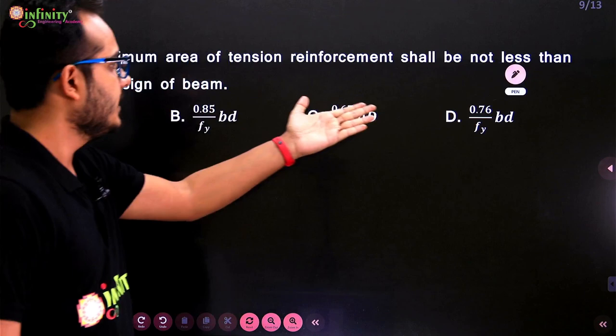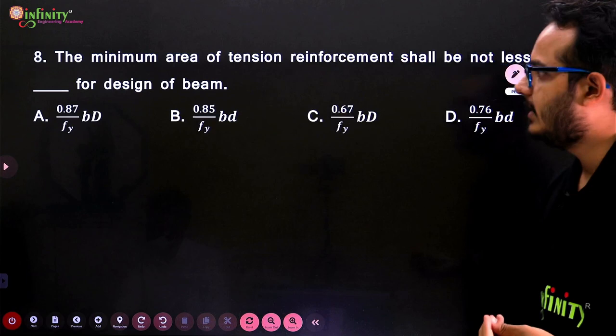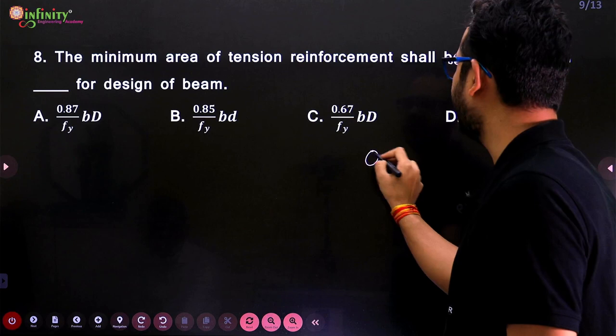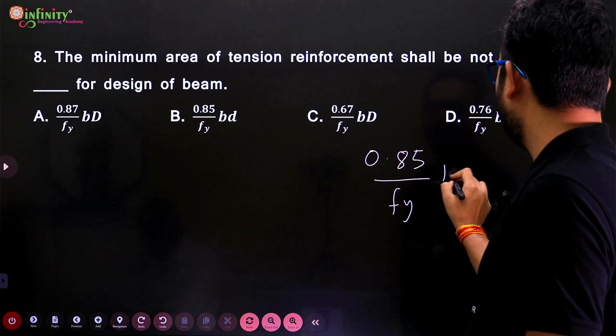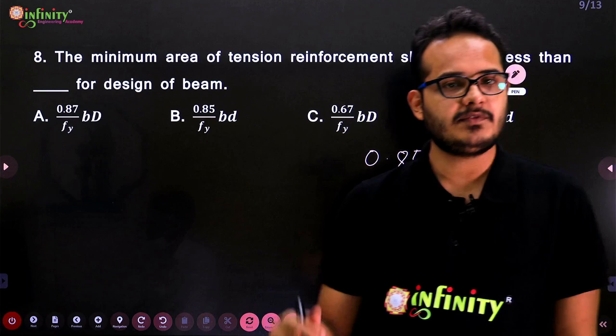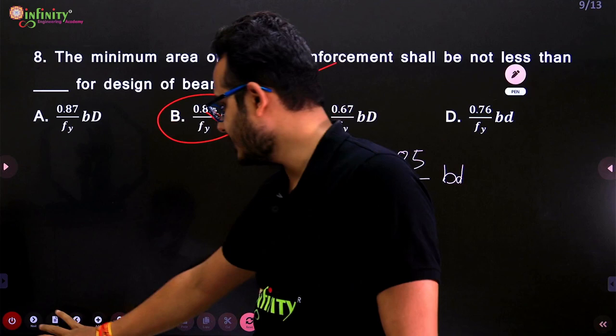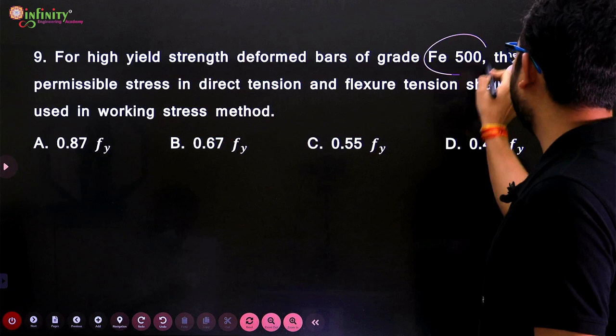Next question: The minimum area of tension reinforcement in a beam shall not be less than — as per IS 456. For a beam, the minimum percentage of tension reinforcement is 0.85/fy × b × d, and the maximum reinforcement is 4% of b × d. For the minimum, the answer is (b).